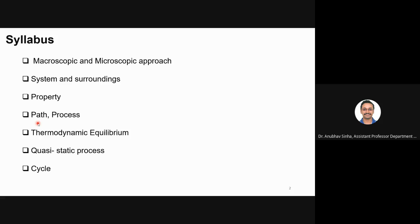We'll talk about property, state, and processes. Then we'll speak about equilibrium — what is equilibrium and what are the different types of equilibrium. Then we'll look into quasi-static process and cycle. This is the syllabus for this particular chapter.